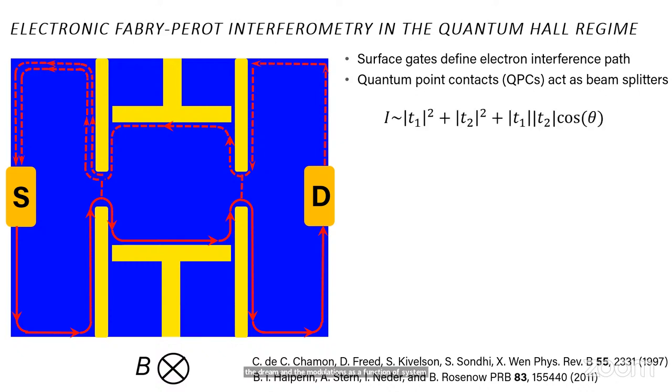The current that comes out is proportional to the transmission matrix element squared of the first QPC, the transmission coefficient. The second transmission coefficient also comes in. That is, how much we siphon off to go through the interferometer. But then there's this cross term that varies as a cosine. And this cosine theta here, the theta is the interference phase. It's not the anionic phase. It's just the phase difference between the path taken around the loop and the one that was originally backscattered.